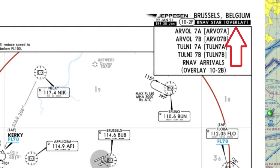It says overlay here because there's another version of the same arrival chart that doesn't use RNAV but instead relies on ground-based navigation such as VORs. So this chart is basically a GPS version of that VOR arrival.